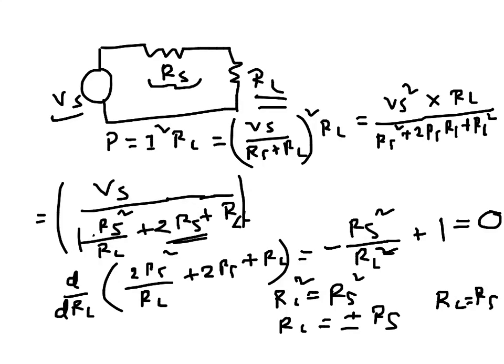So this means the maximum power will be transferred to the load when the load resistance is equal to the line resistance.